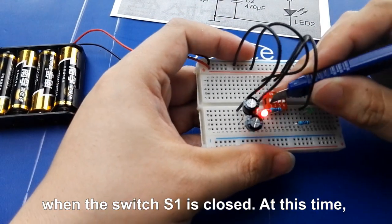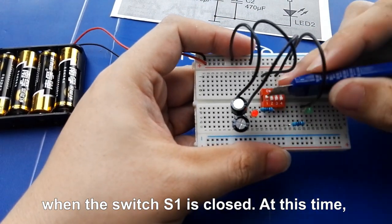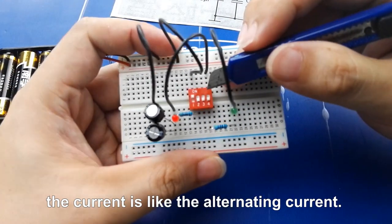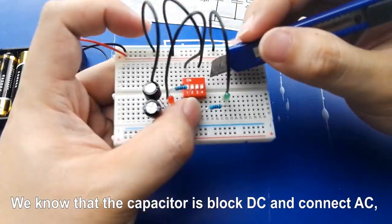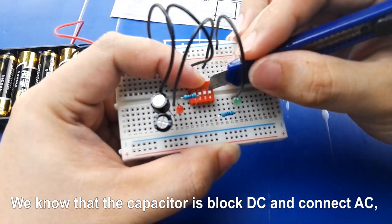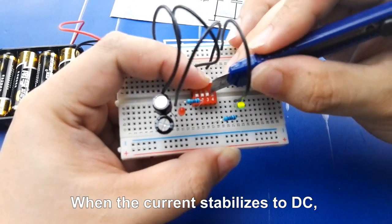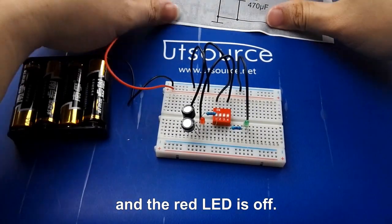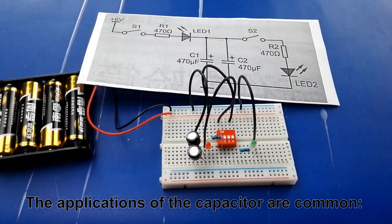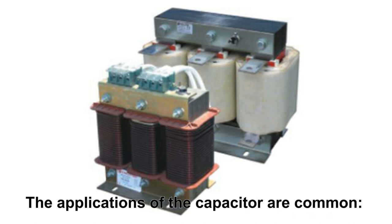The reason is that the current is abruptly changed when switch S1 is closed. At this time, the current is like alternating current. We know that the capacitor blocks DC and connects AC, so the current can pass. When the current stabilizes to DC, the capacitor is equal to an open circuit and the red LED is off.